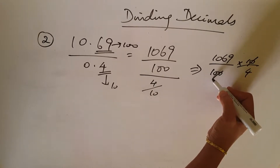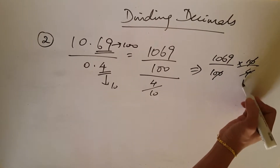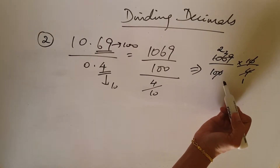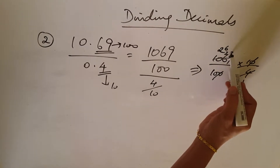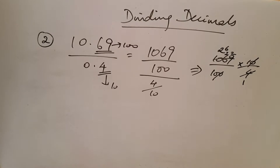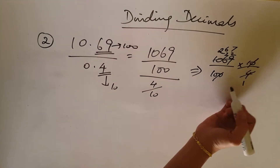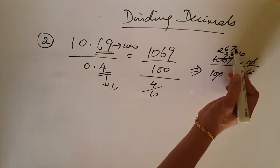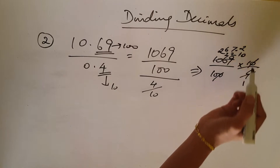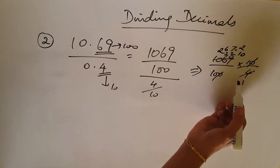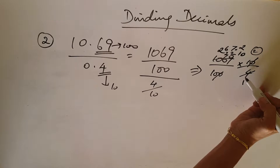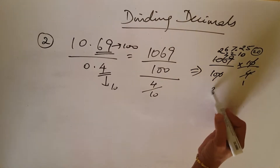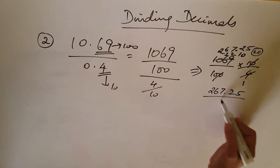The zeros cancel. Now dividing 1069 by 4: 1 four is 4, 2 fours are 8 with remainder 2, bring down 6 — 6 fours are 24 with remainder 2, bring down 9 — 7 fours are 28 with remainder 1, put 0 — 2 fours are 8 with remainder 2, then 5 fours are 20. So we get 267.25 divided by 10.